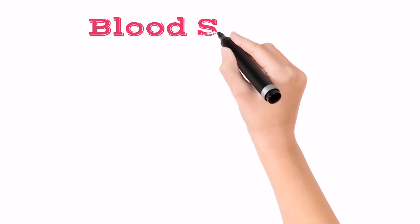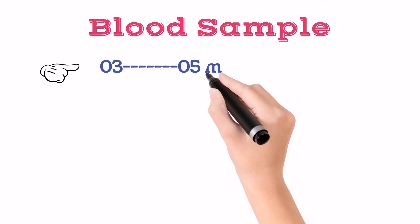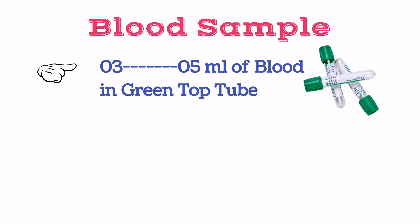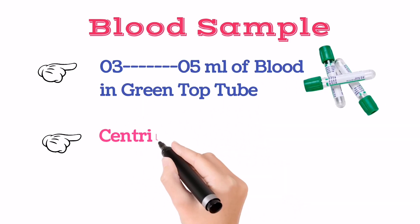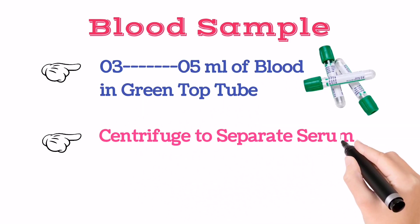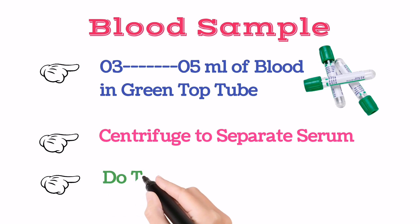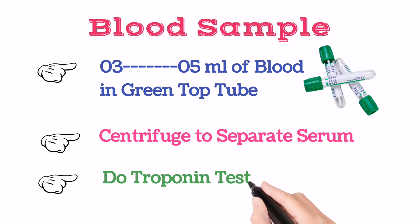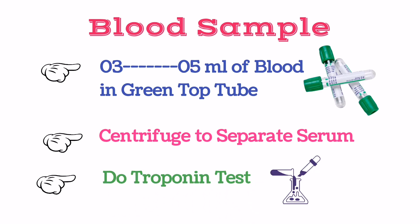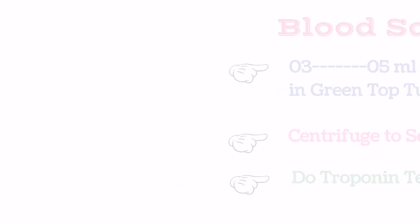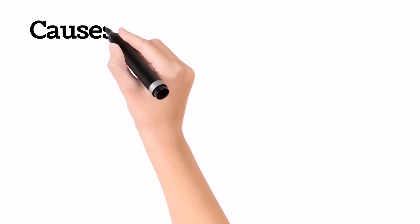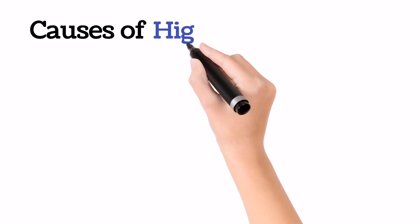What type of blood sample is needed to do the troponin test: it should be 0.3 to 5 ml of blood sample in a green top tube, then centrifuge to get serum, and then serum will be used for the test.